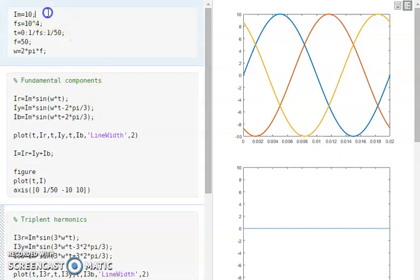Here you can see that the maximum value of the fundamental current is 10 Ampere and I selected a sampling of 10^4 and the time is taken from the interval 0 to 1/50. The 50 stands for the frequency of fundamental component and here the omega is 2πf.